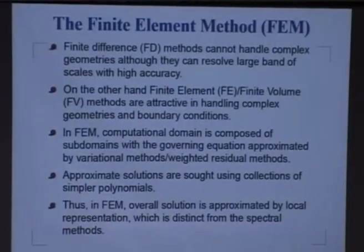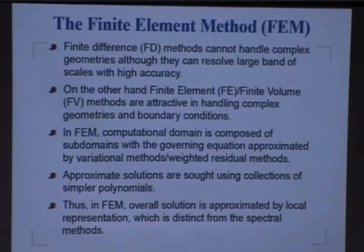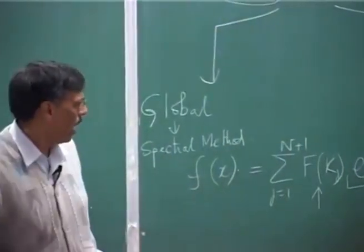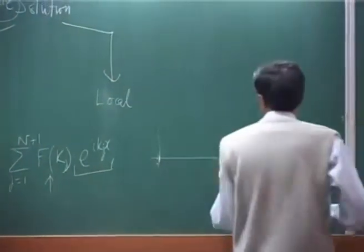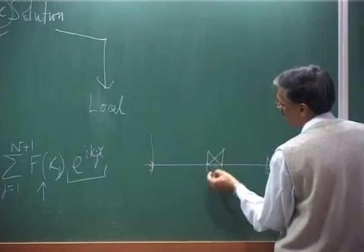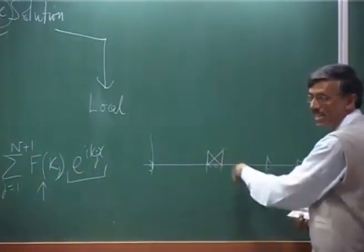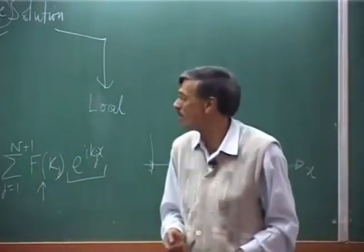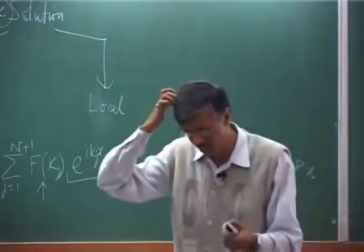So, even talking about generalities, within each method itself we can distinguish between global and local methods. In FEM, we decompose the problem into smaller subdomains and try to satisfy governing equations by some weighted residual method. One of the essential elements of FEM is that the approximate solutions we write are going to be simpler polynomials. Here in the spectral case it was cosine or sine — a global function — but in FEM I would approximate the solution locally. If this is one node and that is another node, my local solution behavior would be a linear combination of two modes.